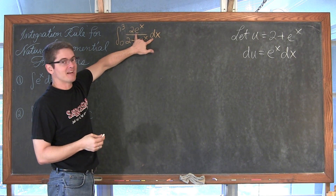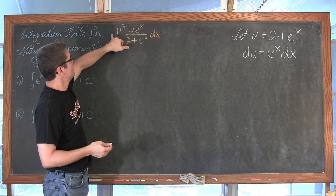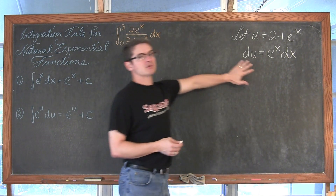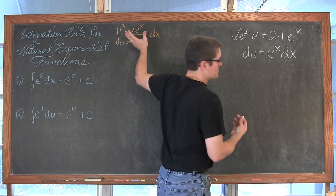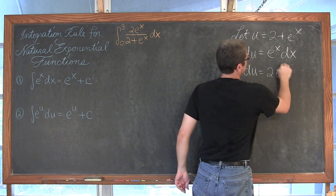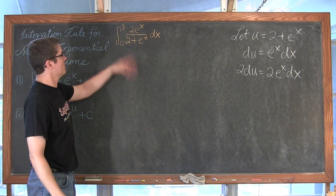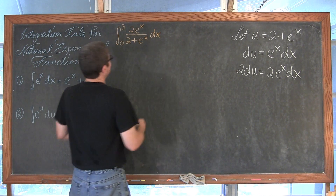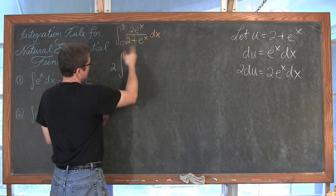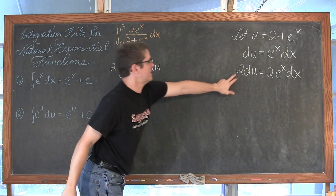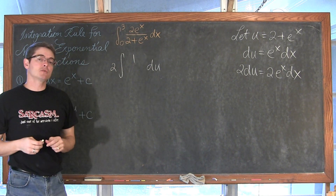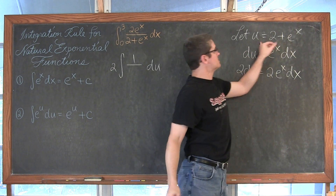I have a coefficient of 2 in the numerator, not just e to the x dx. So I will multiply both sides of the equation by 2 to get 2 du equal to 2 e to the x dx. Now we have direct substitution to get rid of all references of x. The indefinite integral becomes 2 times 1 over u du — the numerator is taken care of and the denominator 2 plus e to the x is just u.